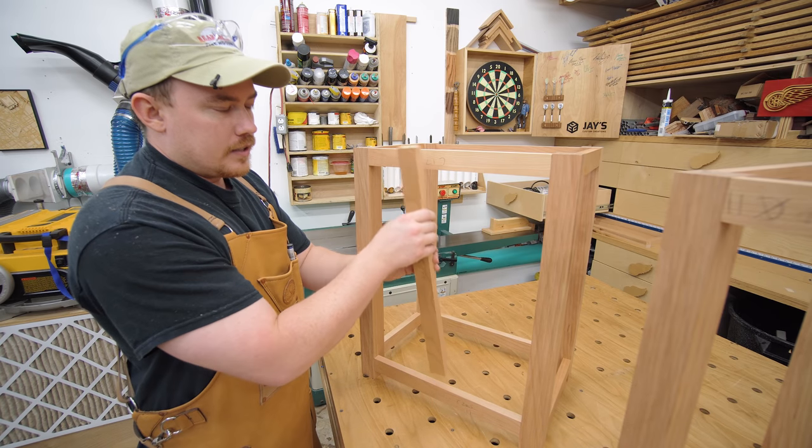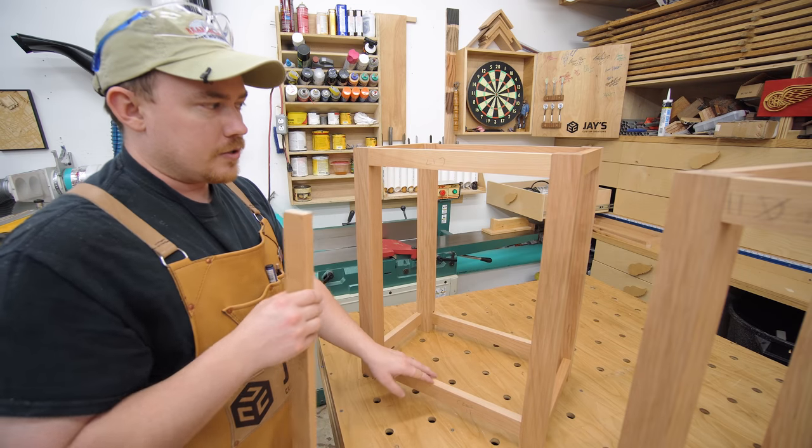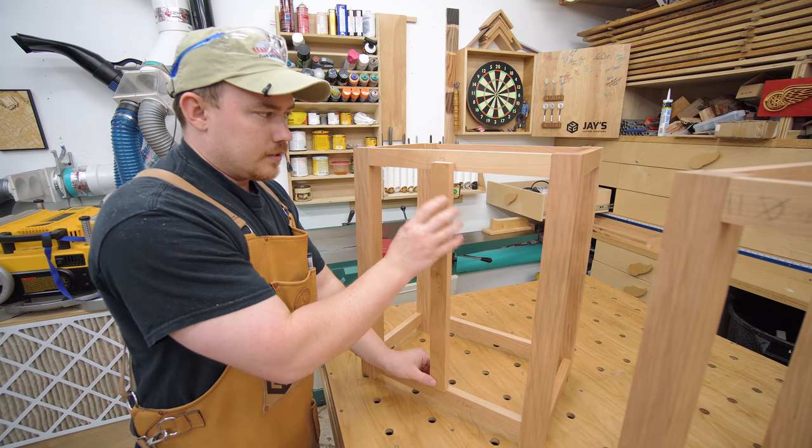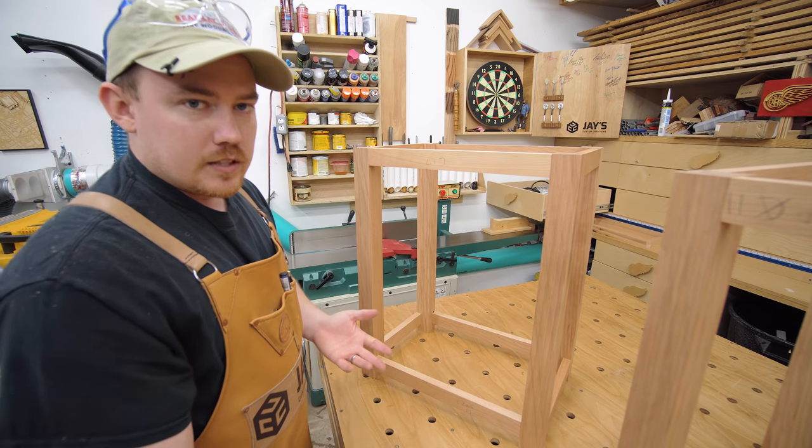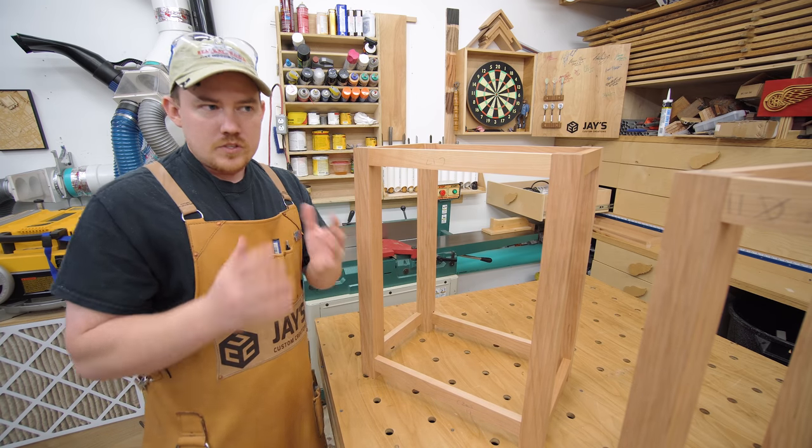So I held off on cutting this because I need the groove established in order to establish the final length of this piece and to size the tongue. So how do we cut the groove? There's several different ways.